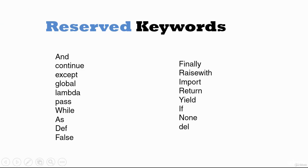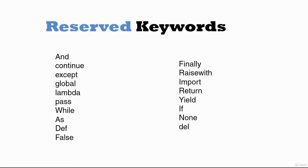In this lecture, we had a look at some keywords reserved for the Python language. We also tried to use one of them — 'def' — to create a variable, and the interpreter complained. Keywords are reserved for the Python language, so when creating variables or lists, try not to use them because it will not work.